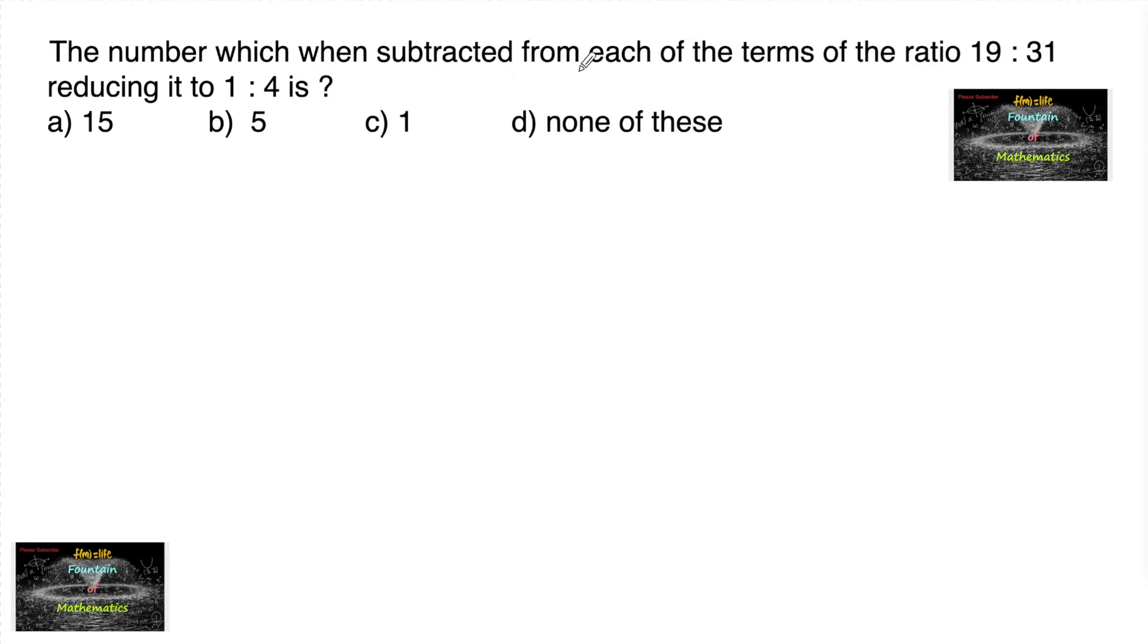The number which when subtracted from each of the terms of the ratio 19:31, reducing it to 1:4 is?